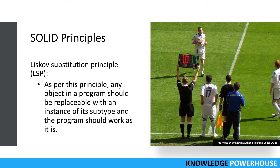This means designing by contract: whatever the parent class expects must hold true in the child class. You cannot make validation stricter or looser, as that would violate the interface defined by the parent class method. A new method with a new signature can be added for new clients, but for existing clients using the same method signature, the child class should not change the existing constraints. Existing clients can use the parent or child class with confidence.